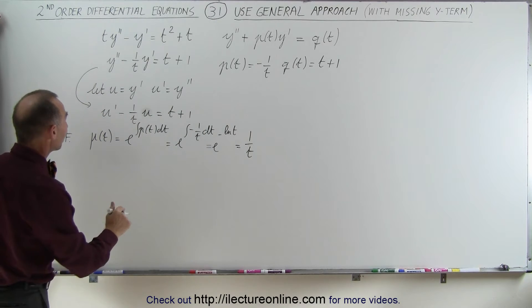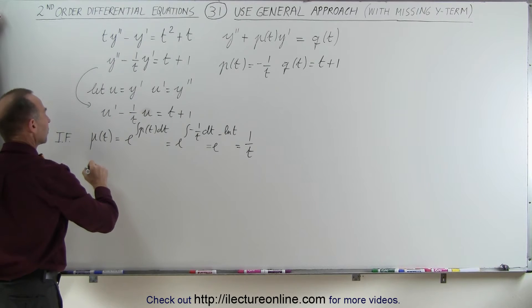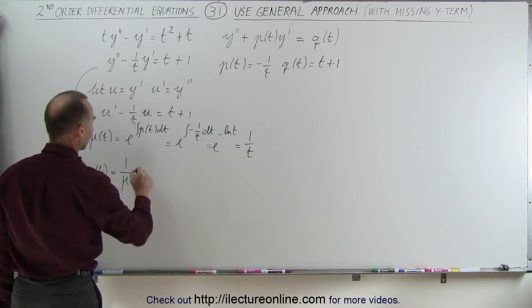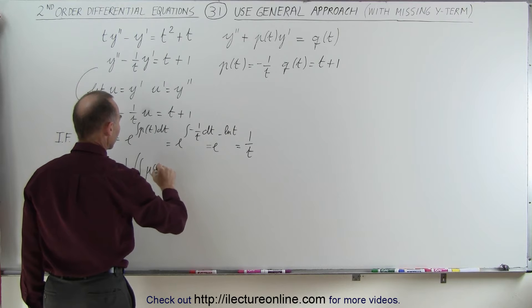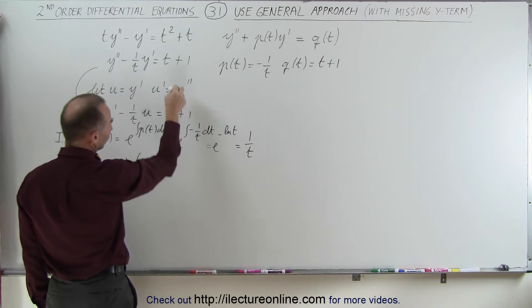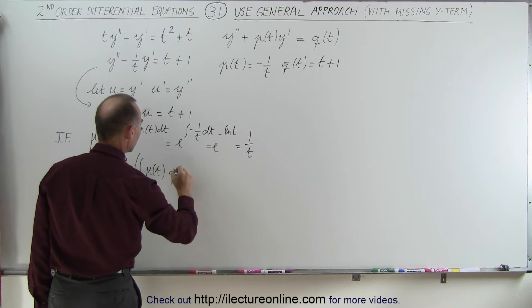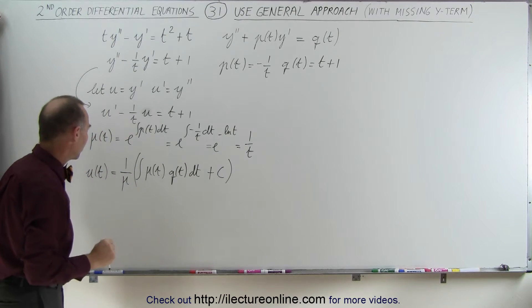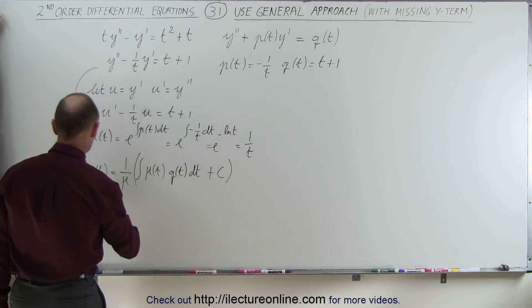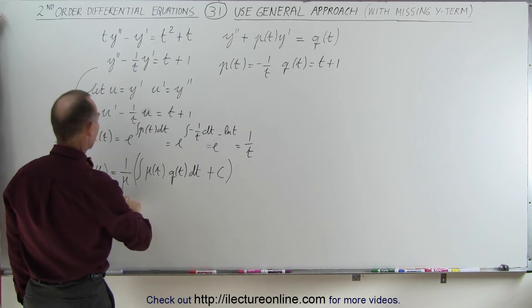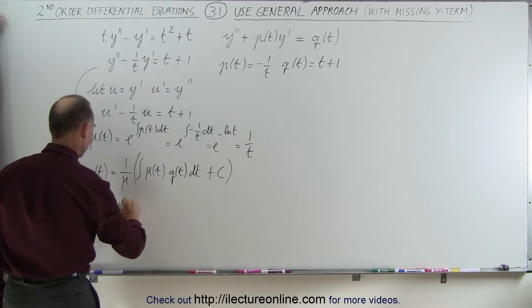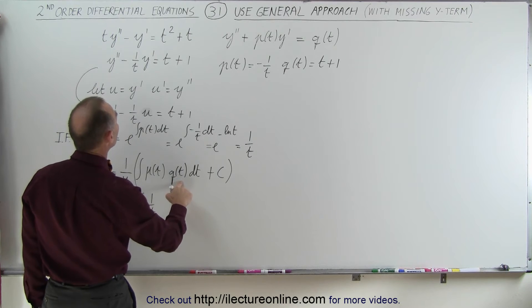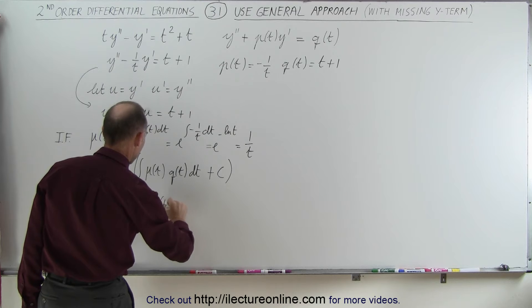There's our integrating factor. Now we can find the solution to the first-order linear differential equation. The general solution is U of T equals 1 over the integrating factor times the integral of the integrating factor times Q of T dt, plus a constant of integration. Plugging in our values: U of T equals T times the integral of 1 over T times (T plus 1) dt, plus C.